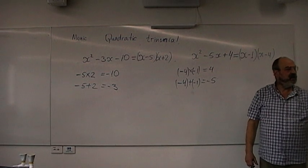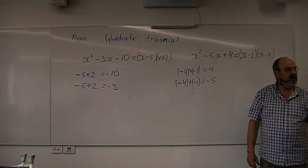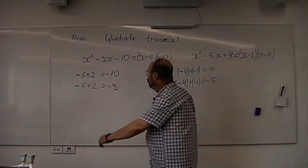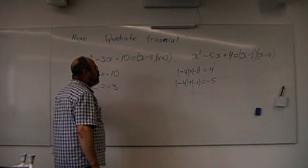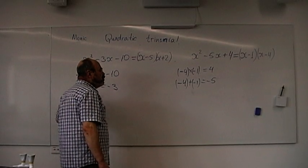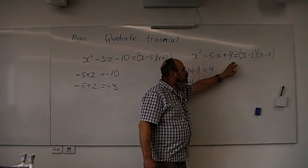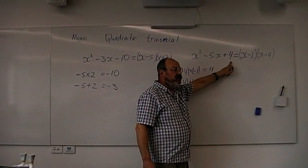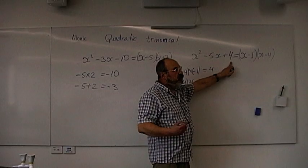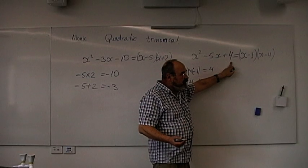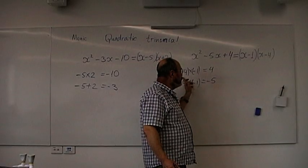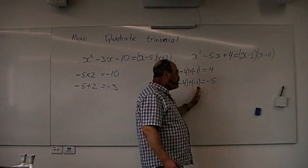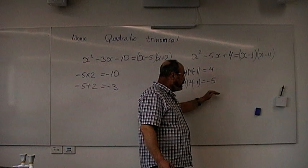A student asks why in the previous example both factors were minus, while in the one before they were different signs. Because in the case of x squared minus 5x plus 4, the numbers multiply to positive — so they both have to be negative. Negative times negative is positive, and negative plus negative is negative.